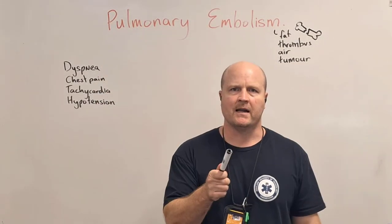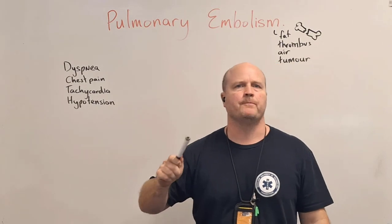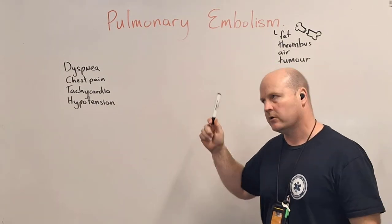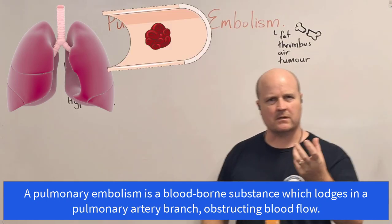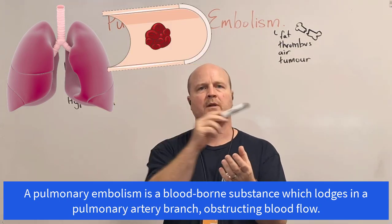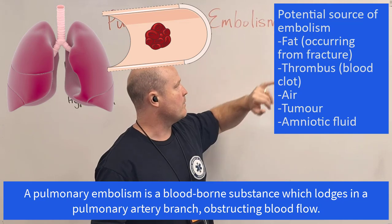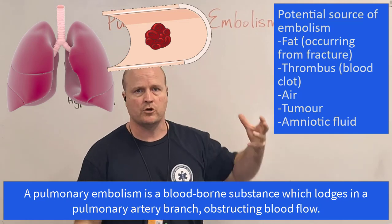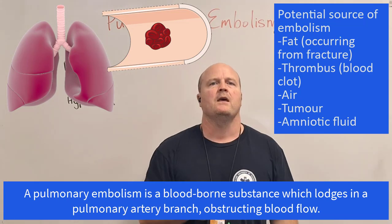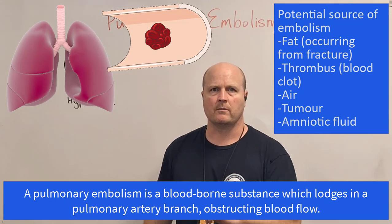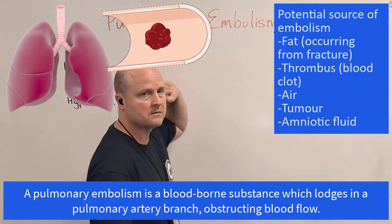Hello team, my name's Ben and let's talk pulmonary embolism. So let's break down the word. Pulmonary means lungs and an embolism is a substance that's traveling through the bloodstream. So it could be fat, a thrombus, clot, air or a tumor — some substance that's flowing through the bloodstream and it's going to lodge and cause a problem. So in this instance, pulmonary, it's going to lodge in our lungs.